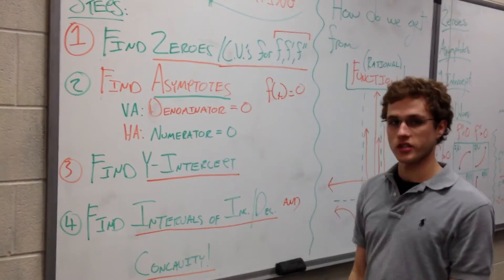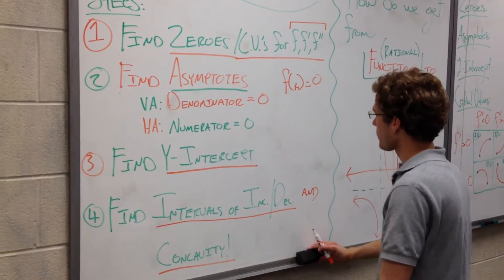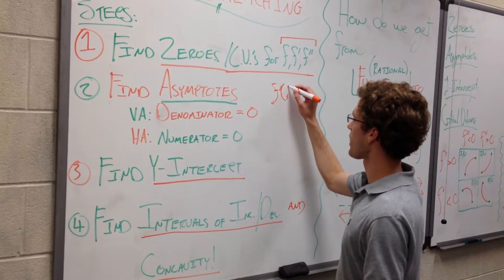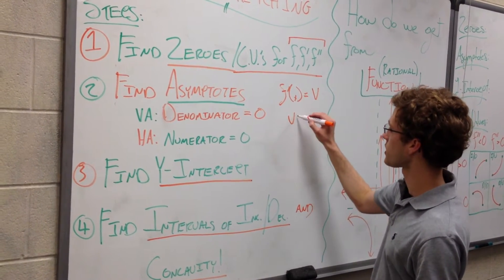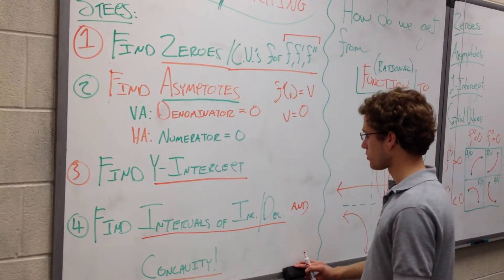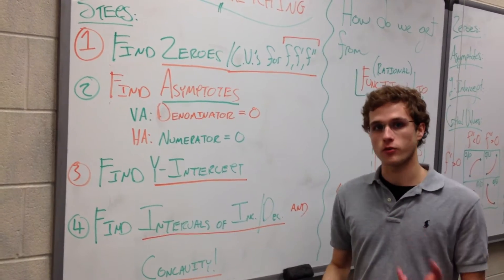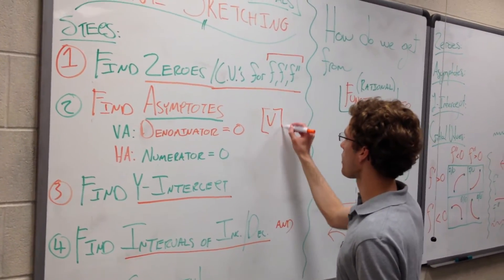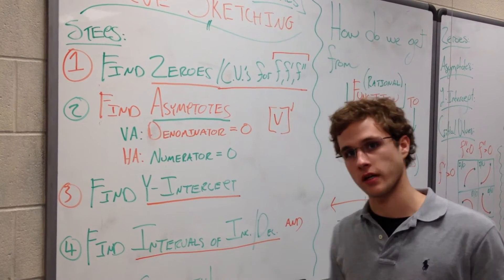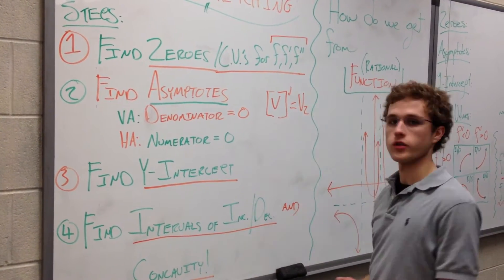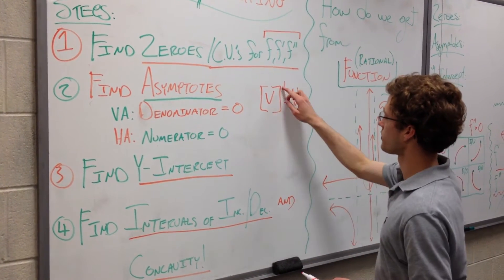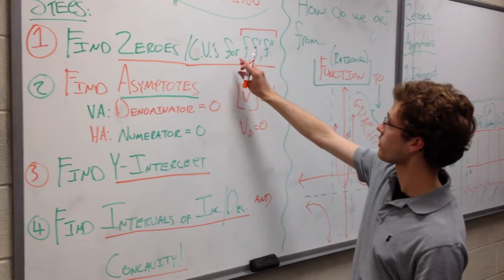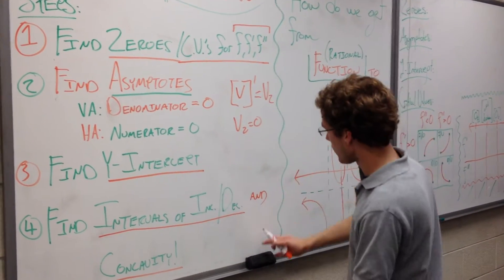To do this, set your equation equal to zero and do the algebra to get your zeros. Then take the derivative of your function — f prime of x — set that equal to zero to get critical values for the first derivative. Then take the derivative of the derivative — the second derivative — set that equal to zero. You have now found the critical values for f, f prime, and f double prime. You're done with step one.